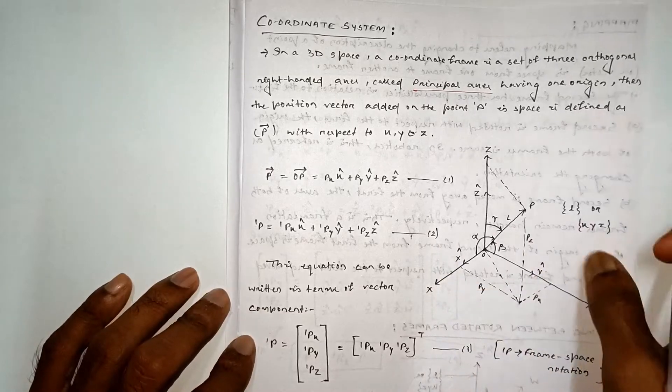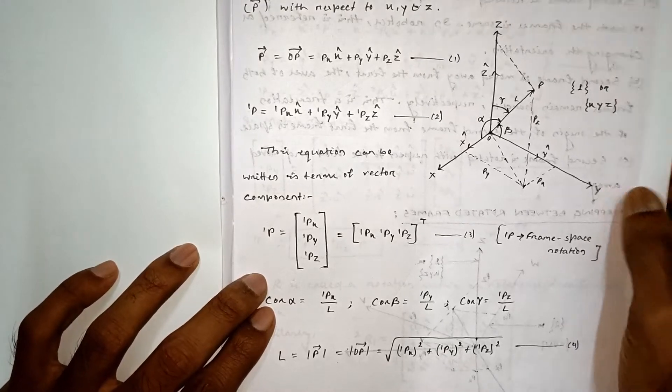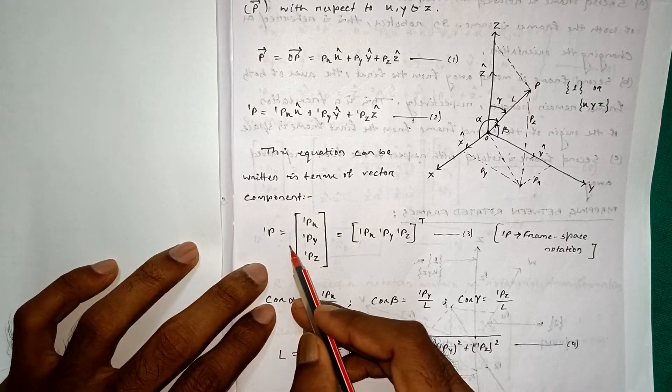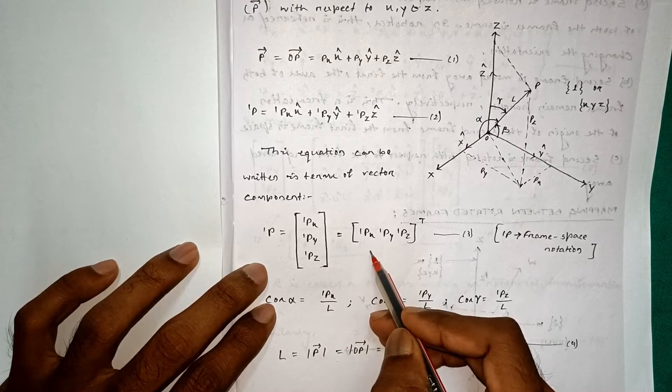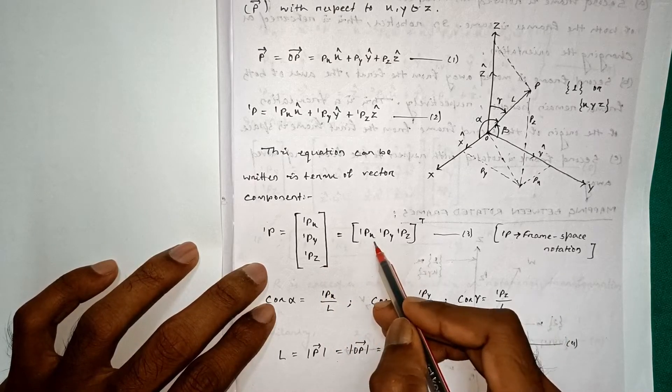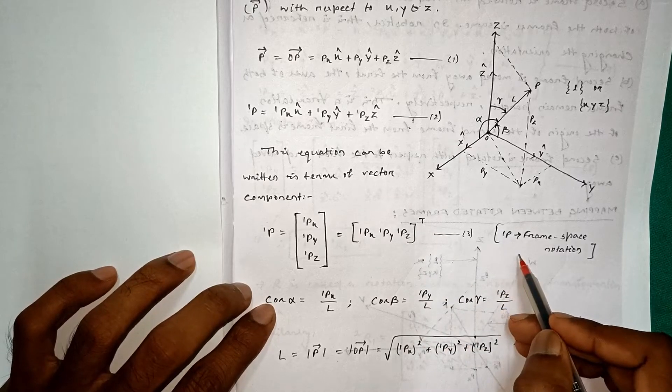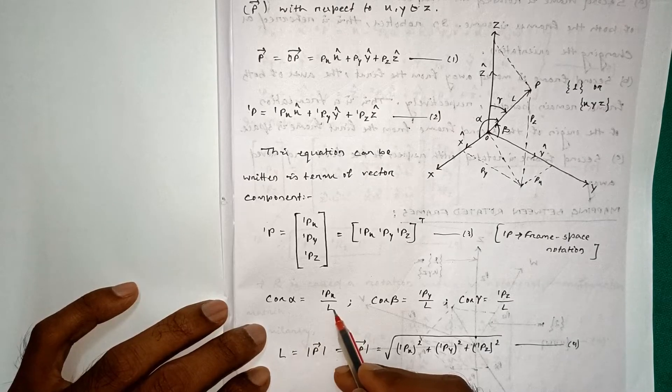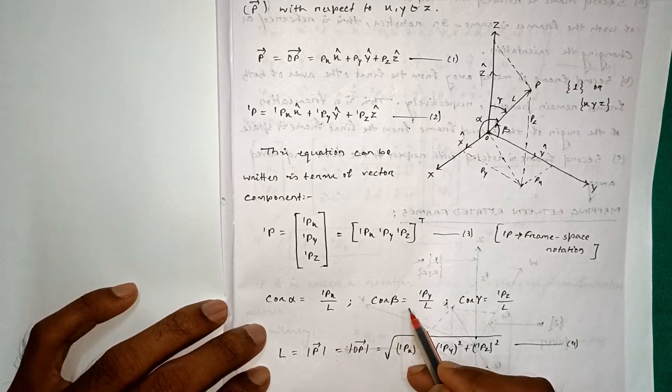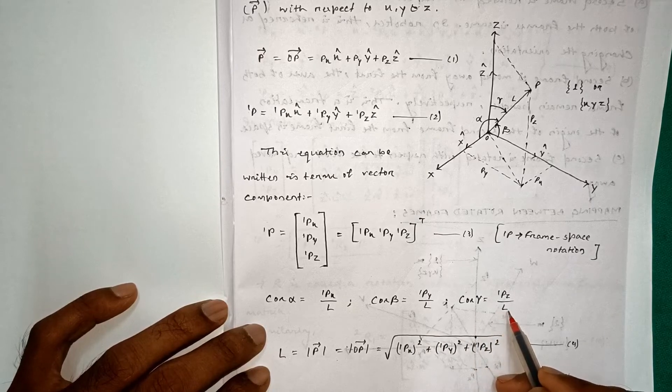This equation can be written in terms of vector component. So this is 1P is equal to 1PX, 1PY, 1PZ, and we can write it as also 1PX, 1PY, 1PZ transpose. Here 1P is the frame space rotation where cos alpha is equal to 1PX upon L, cos beta equal 1PY upon L, cos gamma is equal to 1PZ upon L.